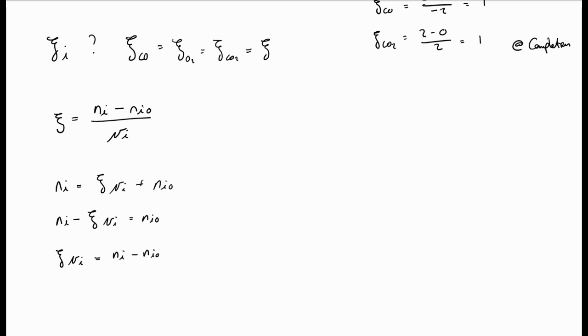The extent of reaction multiplied by the stoichiometric coefficient of the CO2 will give us that value. This value gives us the change in species I during the reaction, which can be any one of the species.